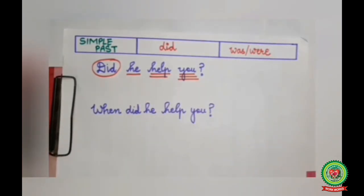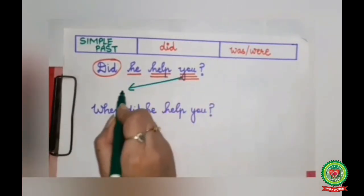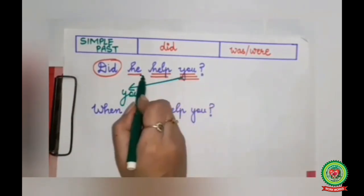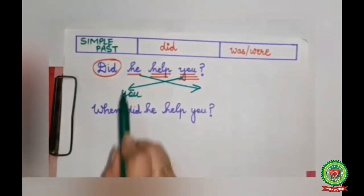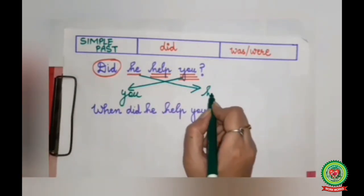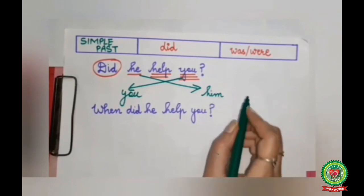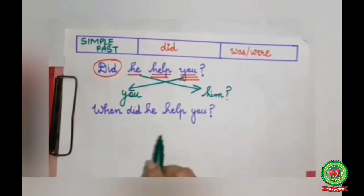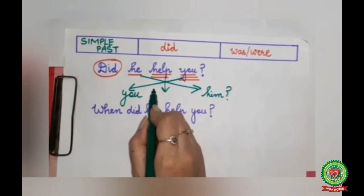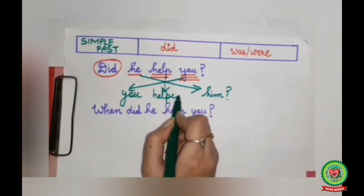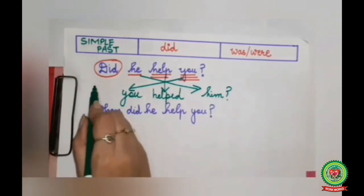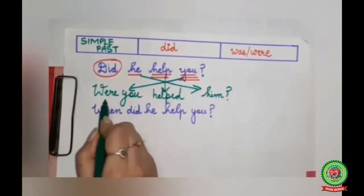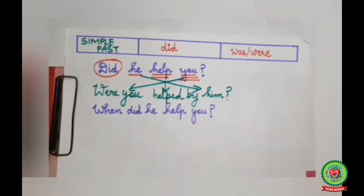'You' will come in the beginning, 'he' will go to the last, and the subjective case will change into objective case. The objective case of 'he' is 'him'. 'Help' will change into 'helped'. With 'you' we will use 'were' as the helping verb. So the question becomes: 'Were you helped by him?' with a question mark at the end.